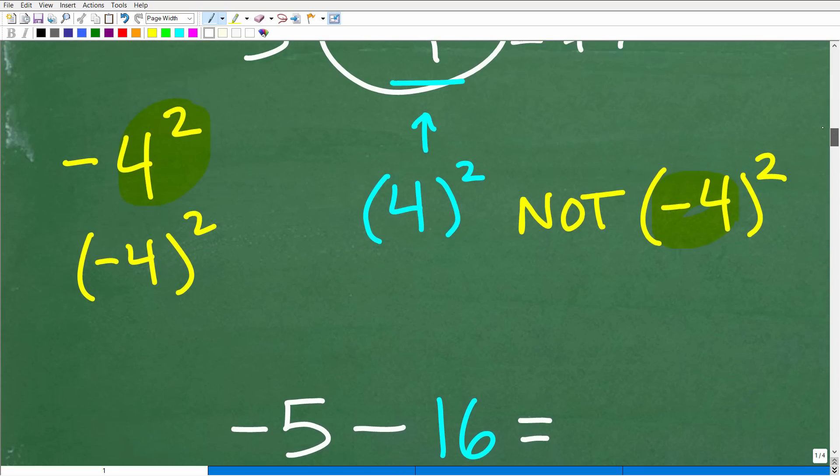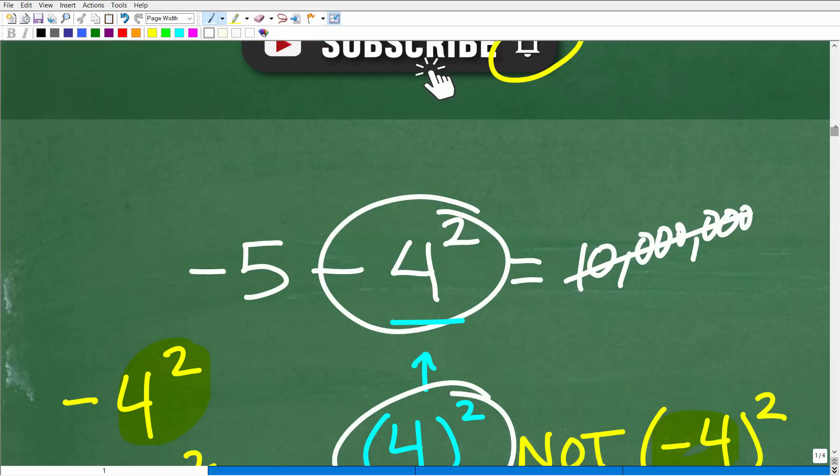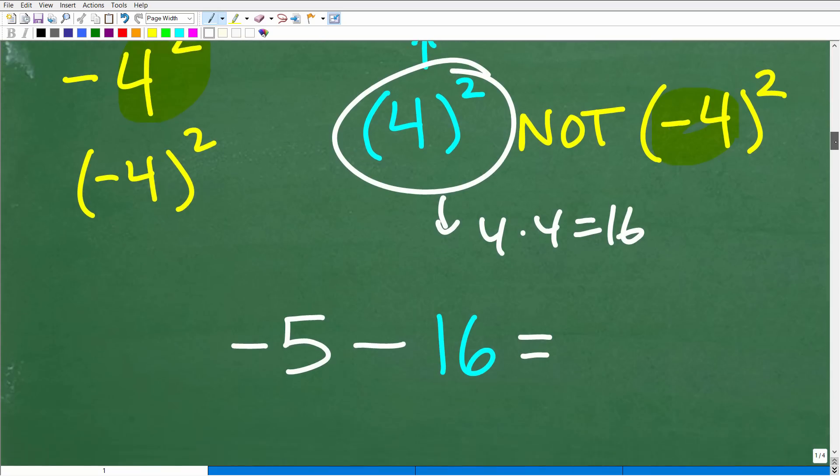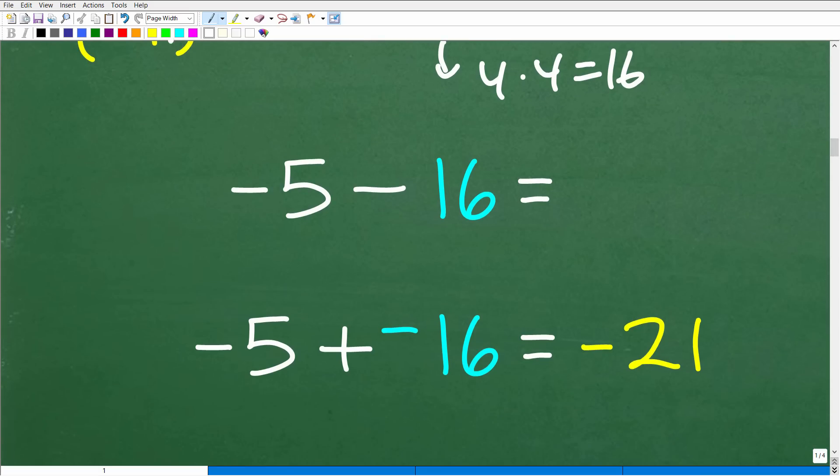So negative four squared, excuse me, let me kind of go back here, is what? Well, that's positive four times positive four, which, of course, is 16. So negative five minus four squared is going to be negative five minus 16. And now we are kind of home free to figure this out. So negative five minus 16. If you are up to speed on your positive and negative number rules, this is the same thing as negative five plus negative 16. And, of course, negative five plus negative 16 is negative 21.